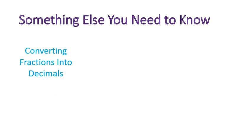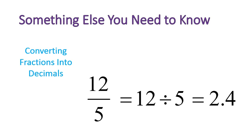Something else you'll need to know is how to convert a fraction into a decimal. That's a pretty straightforward procedure. 12 over 5 is the same thing as 12 divided by 5, and that gives you 2.4. That's the basics of converting a fraction into a decimal — fractions mean division.